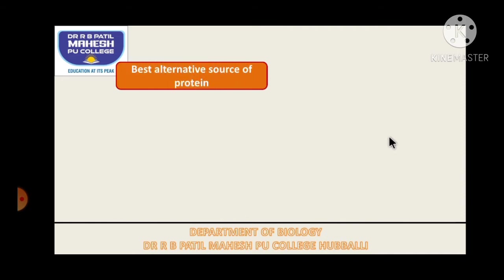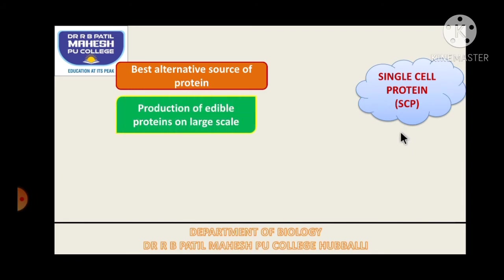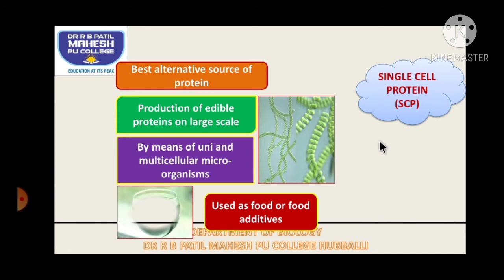So scientists have invented the best alternative sources of proteins, which are called single cell protein. Single cell protein is the production of edible protein on a large scale by using uni- to multicellular microorganisms. We can make use of unicellular or multicellular but microscopic organisms which are rich with protein. These single cell proteins are used as food or as food additives.